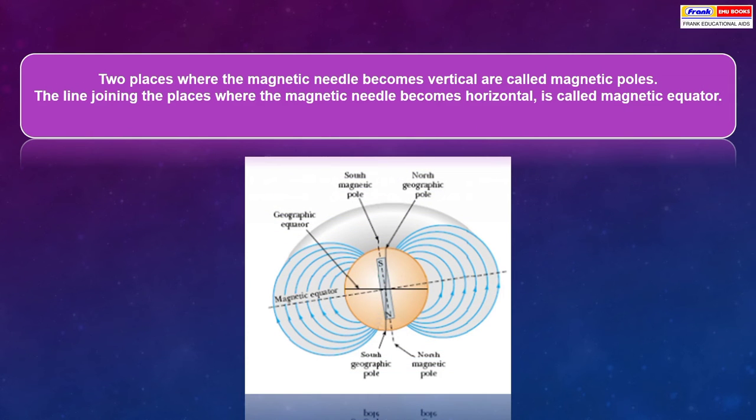Two places where the magnetic needle becomes vertical are called magnetic poles. The line joining the places where the magnetic needle becomes horizontal is called the magnetic equator. These are the poles: south pole and north pole.